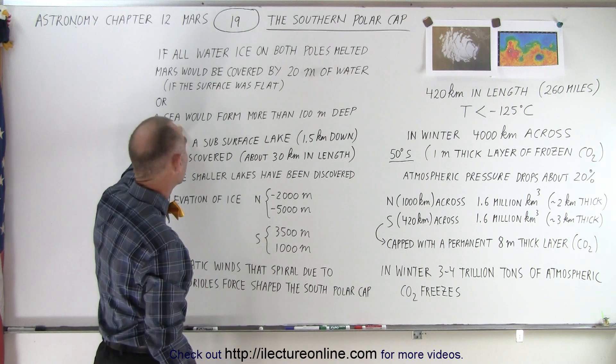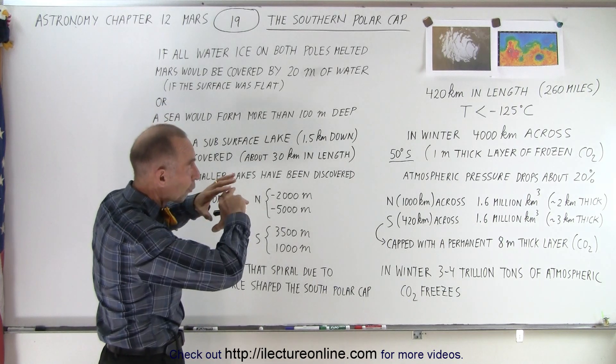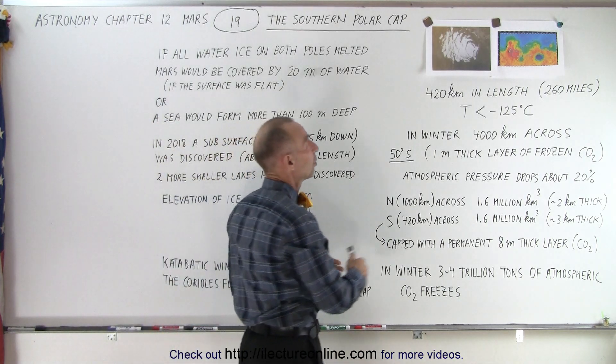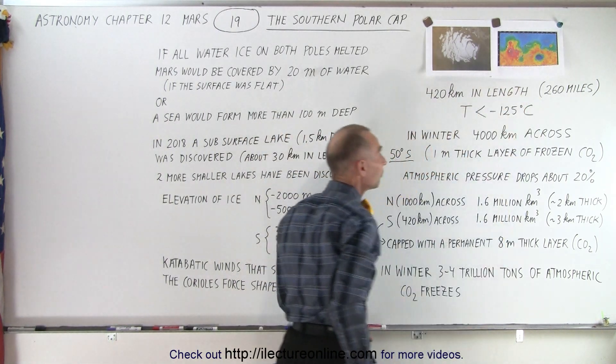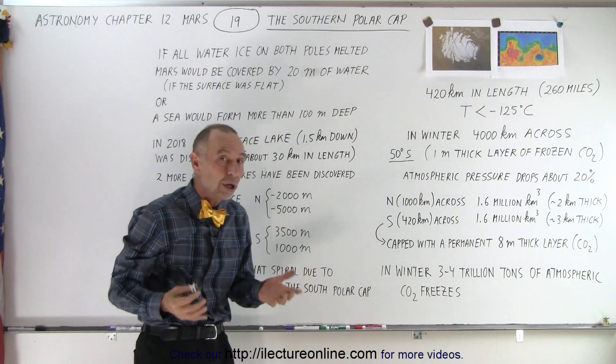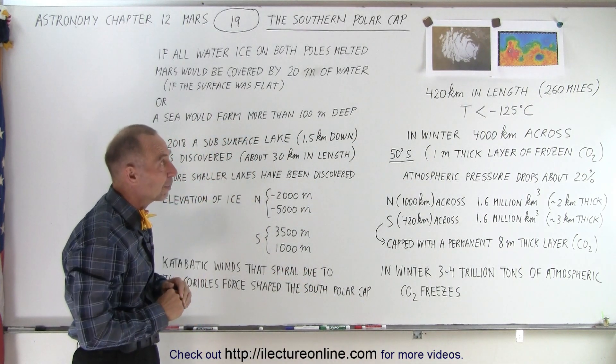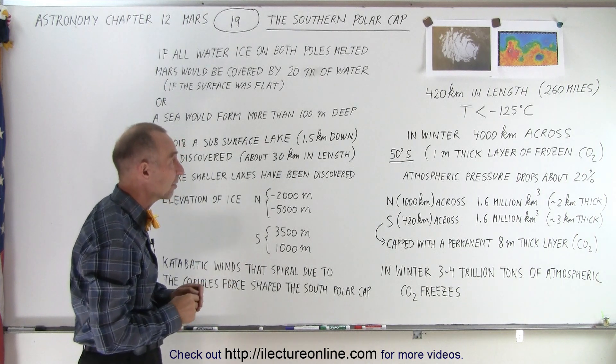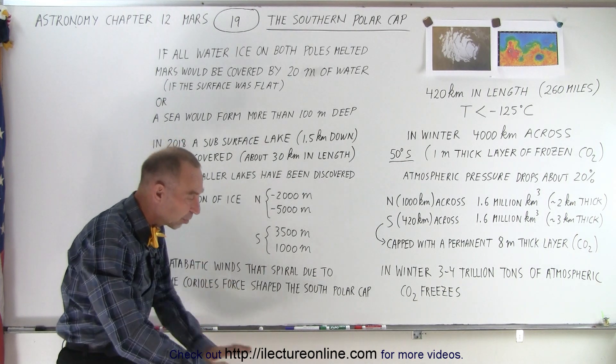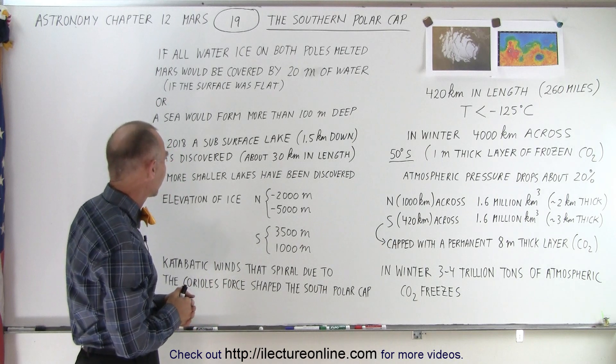Now if we take all that water and we distribute it over the lower lying regions here in this large crater region and the region up above, you'd have an ocean that's well over 100 meters deep on average across the northern hemisphere of Mars. So yes, there must have been a lot of water on Mars in the past and now it's simply locked up subsurface and in the polar caps.